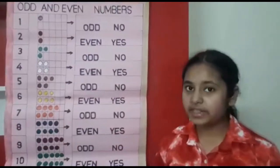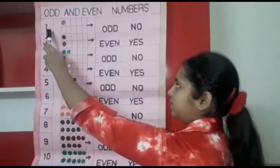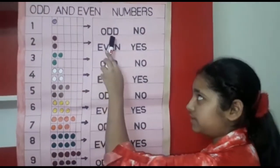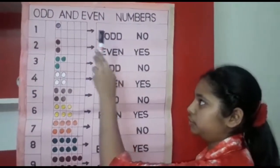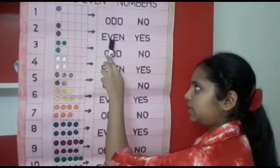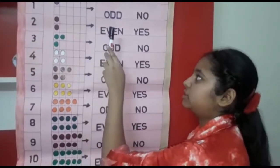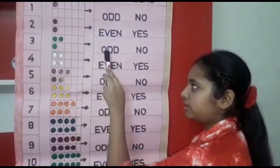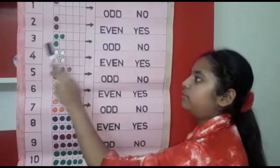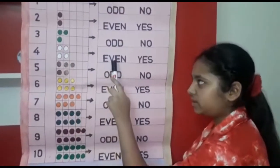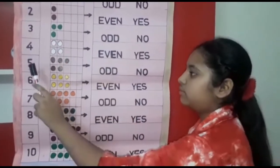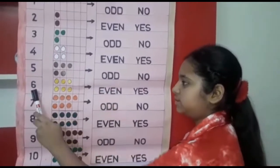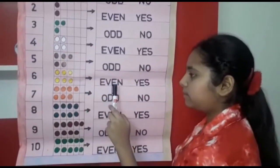So, now let us repeat. 1 is an odd number because it is not divisible by 2. 2 is an even number because it is divisible by 2. 3 is an odd number. 4 is an even number. 5 is an odd number. 6 is an even number.